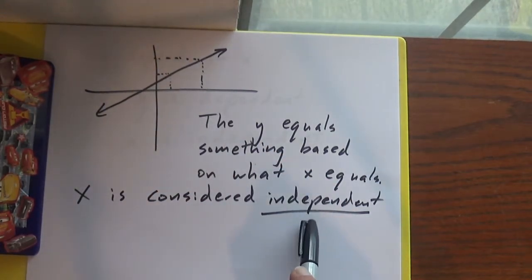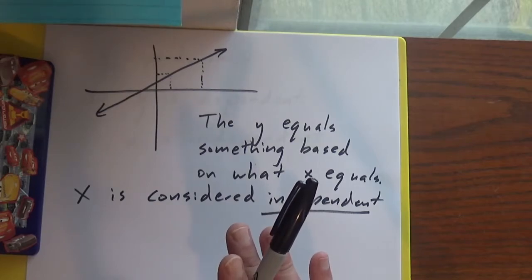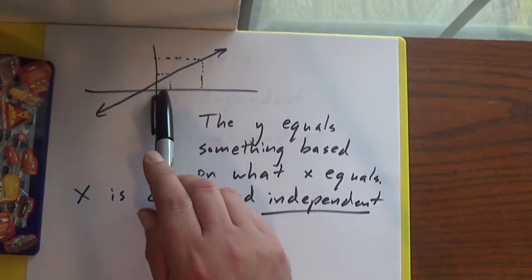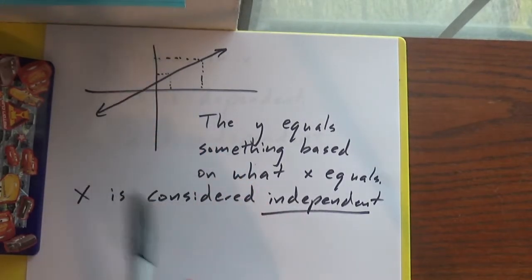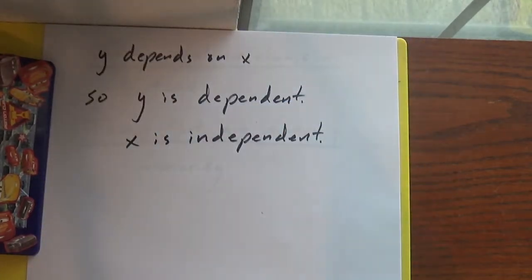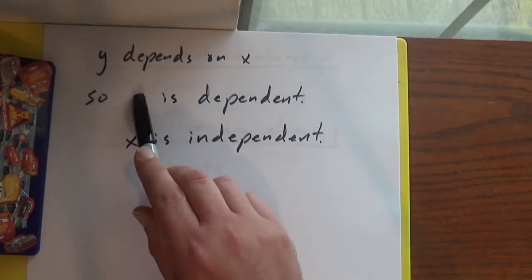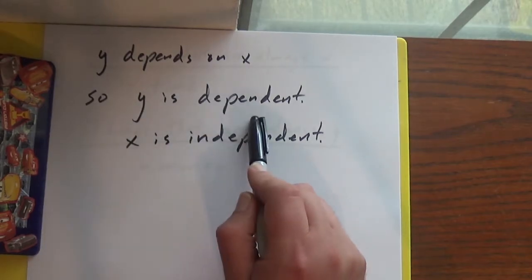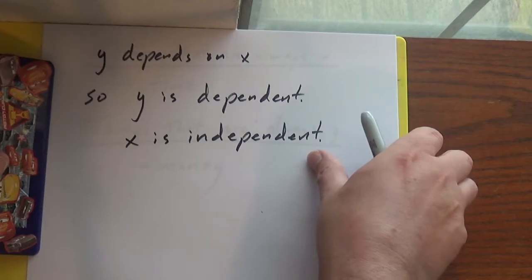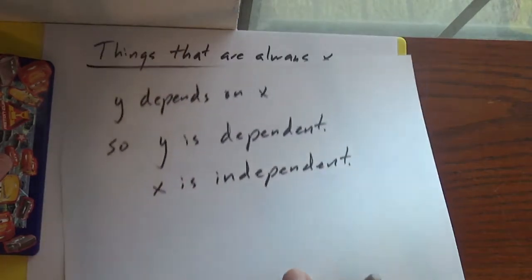Now x is considered independent. So that means we don't have any control over what x is. And the y thing depends on x because when x changes so does y. y depends on x. So y is dependent and x is independent. That definitely is a question that ends up showing up on standardized tests.